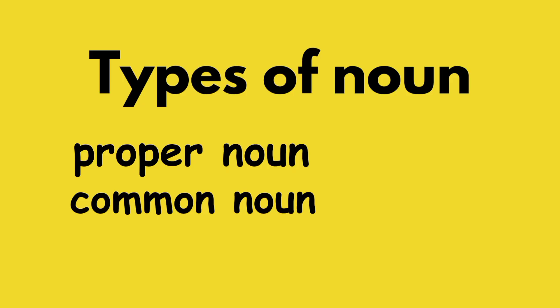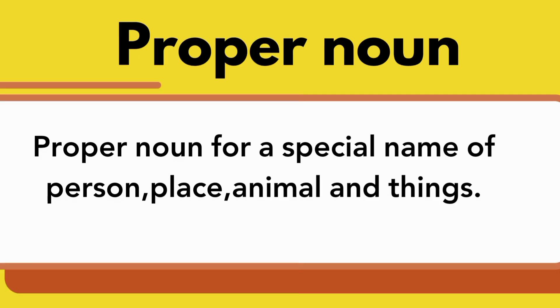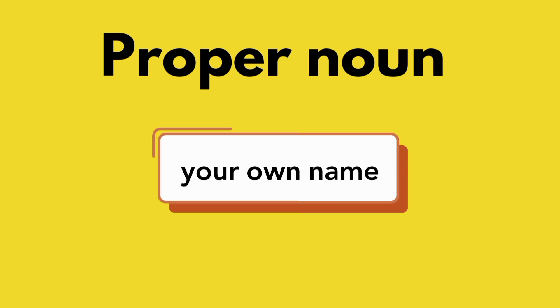Types of noun. There are different types of noun. Here we discuss only proper noun and common noun. Proper noun is a special name of person, place, animal and things. Think of it like your own name — it's special and only belongs to you. That's proper noun.